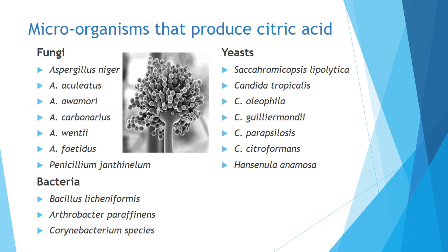Examples of microorganisms that produce citric acid include fungi, bacteria, and yeast. The well-known fungus is Aspergillus niger, which produces an enormous amount of citric acid. Other fungi include Aspergillus awamori, Aspergillus wentii, and some Penicillium species. Bacteria such as Bacillus licheniformis and Corynebacterium species can also be used, and among yeasts, some Candida species are used. Currently, Aspergillus niger is the organism predominantly used in industries for citric acid production.